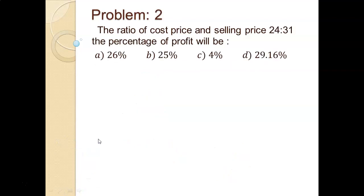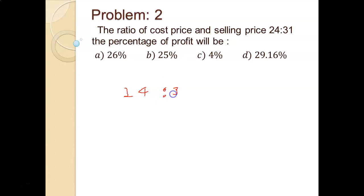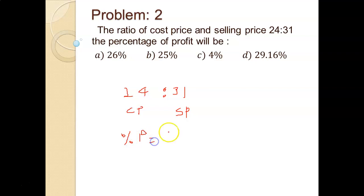Same type of example. Problem number 2: the ratio of cost price and selling price is 24 as to 31. The percentage of profit will be. There are 4 options given. The ratio of cost price and selling price is 24 to 31, so 24 is the cost price and 31 is the selling price. Percentage of profit is nothing but profit upon CP into 100.